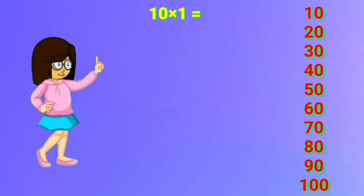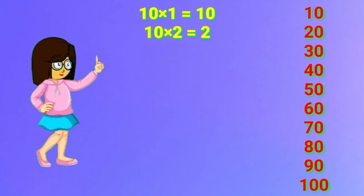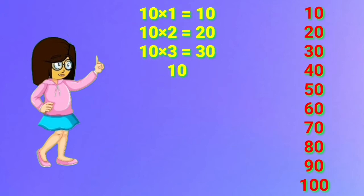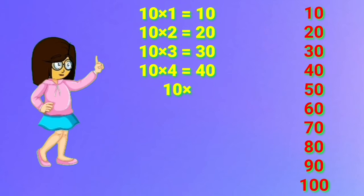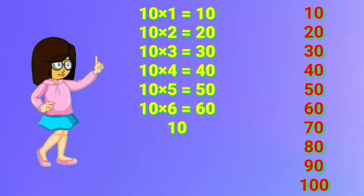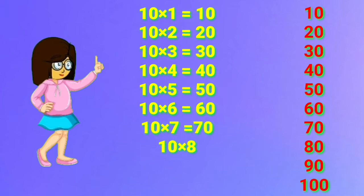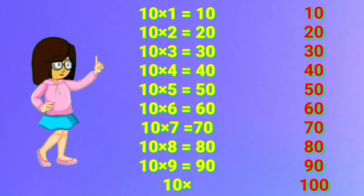10 one's are 10. 10 two's are 20. 10 three's are 30. 10 four's are 40. 10 five's are 50. 10 six's are 60. 10 seven's are 70. 10 eight's are 80. 10 nine's are 90. 10 ten's are 100.